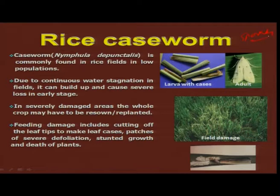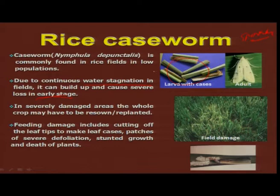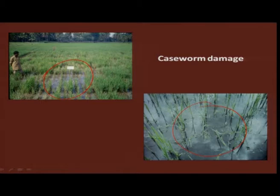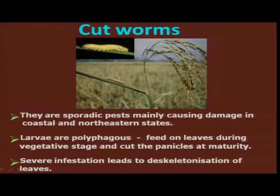Rice case worm, Nymphula depunctalis, is again a sporadic pest, and its incidence is severe wherever there is water stagnation, particularly in the early stage of the crop. The larvae cuts the leaf blade into small tubular cases, and remaining inside these tubular cases, the larvae feeds on the leaf, resulting in defoliation and reduction in plant growth. In some situations, there will be a gappy appearance because the whole plant is killed, and if the pest occurs in the early stage of crop growth, it may require resowing or replanting.